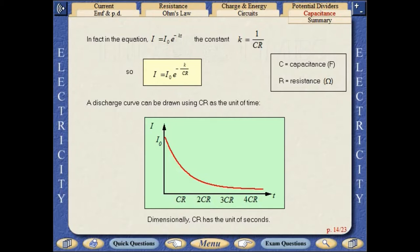A discharge curve can be drawn using CR as the unit of time. Dimensionally, CR has the unit of seconds.